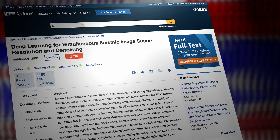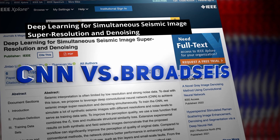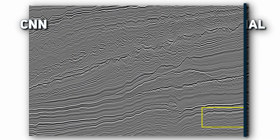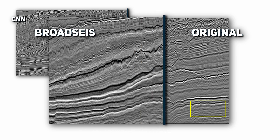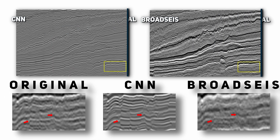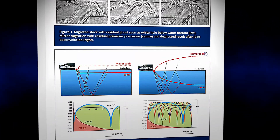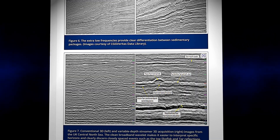Jintao Li in 2021 published a paper comparing a CNN-based method to a technique called broadsize, and the results are astonishing. The CNN-based method not only produces an image with more detail, but also does so at lower cost and computational time than the broadsize technique. Broadsize is actually a technique used to improve resolution of subsurface images using a broad frequency band of seismic energy.